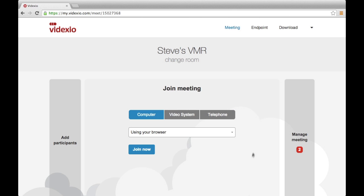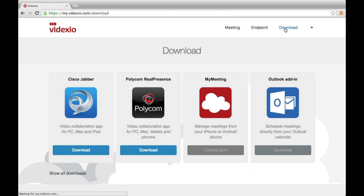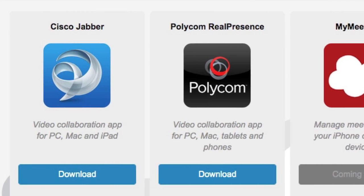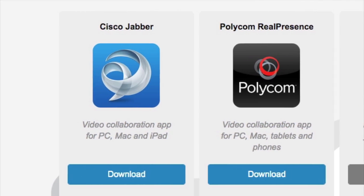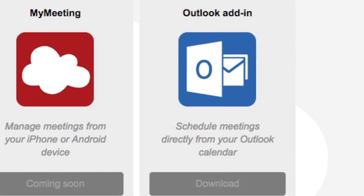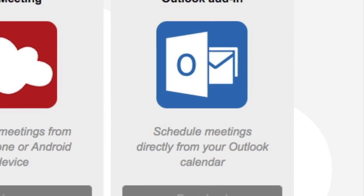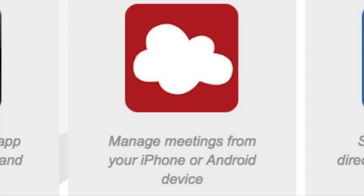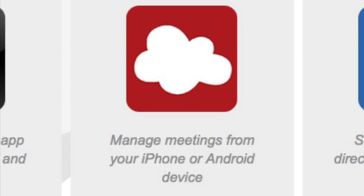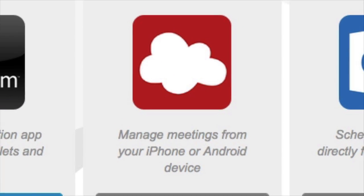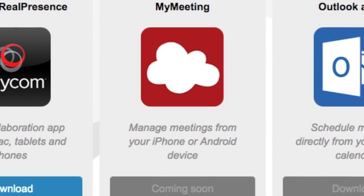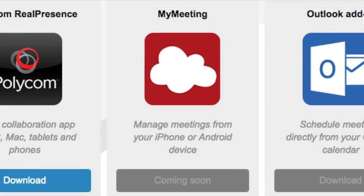The Download Center at myVidexio provides additional tools for our customers. Software clients such as Jabber can be easily downloaded. The ability to schedule meetings directly from your calendar can be accomplished by downloading our Outlook plugin. Users can also download the Videxio app to allow them to join, invite, and schedule calls using your iOS or Android smartphone.